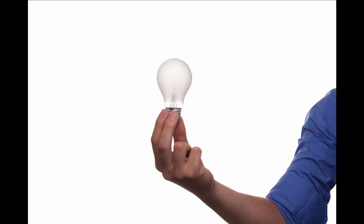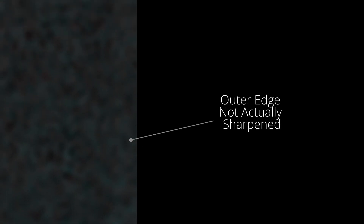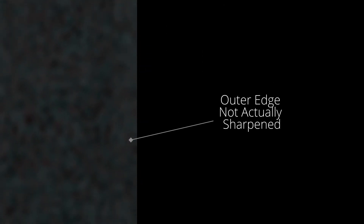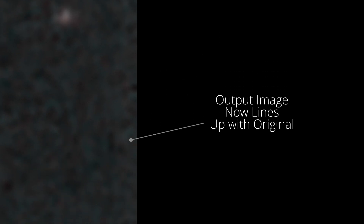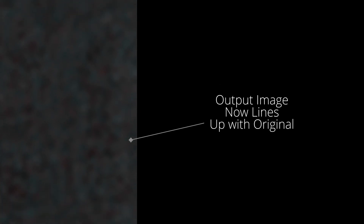On to point number three: the result doesn't line up with the original image. I fixed that. The current neural network does not sharpen the outer edges of the image, and that's why things weren't lining up — there's just not enough data on the edges for the tool to sharpen reliably. I fixed it by adding the five rows or columns of pixels to the outside of the sharpened image. It should now line up, but just be aware you may need to crop the outer portion of the image slightly.